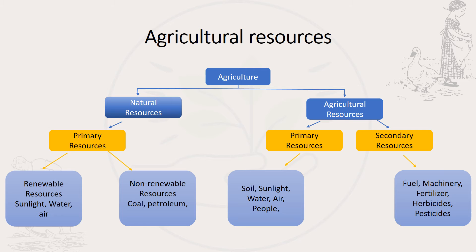To understand different types of agricultural resources, we first need to understand natural resources. Natural resources are resources that can be found in the natural environment. These are the primary resources and they can either be renewable or non-renewable. We are talking about sunlight, water, air, land, animals, plants, coal, oil, and petroleum.